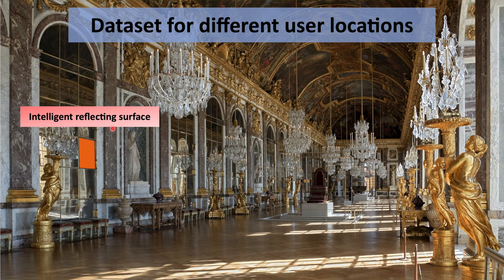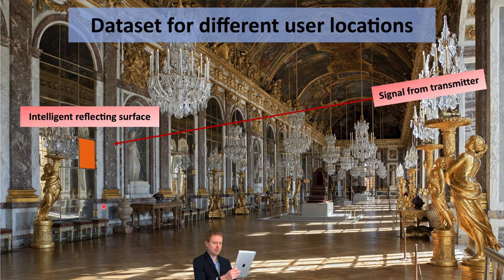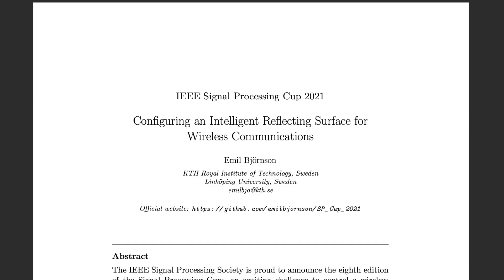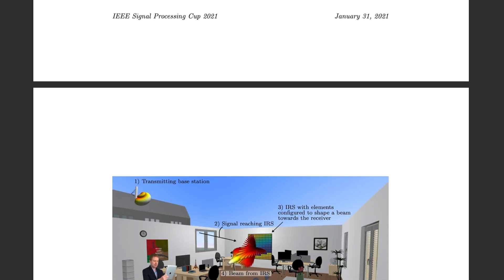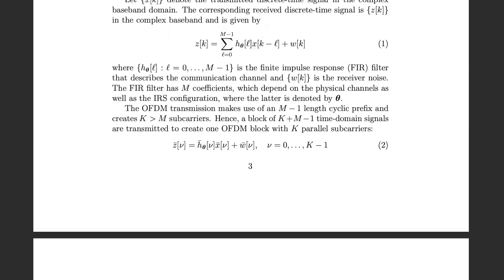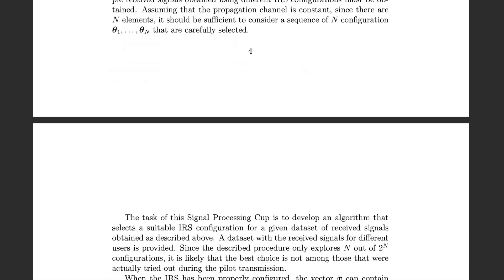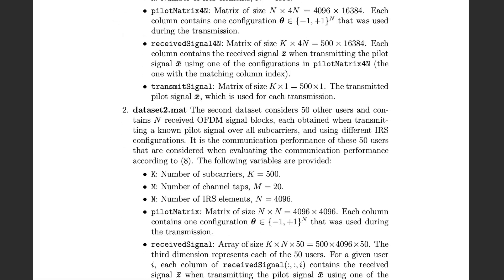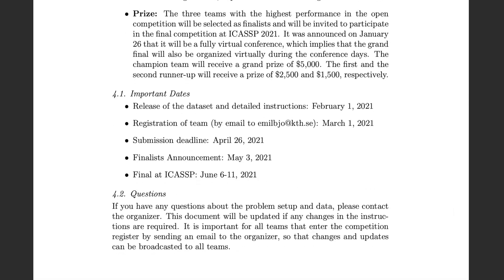In this competition, you are given datasets containing received signals at different user locations and the corresponding transmitted signals. Based on this, your task is to figure out how to configure the surface in the best possible manner. The core challenge is to both learn how the intelligent reflecting surface behaves when changing different control variables, and to learn the propagation channels for different users, so you can figure out how to best configure the surface.